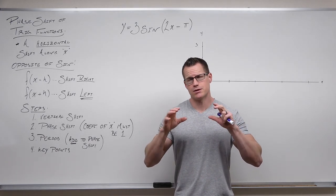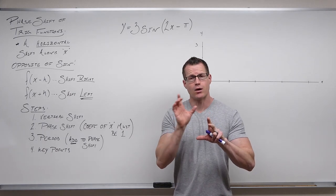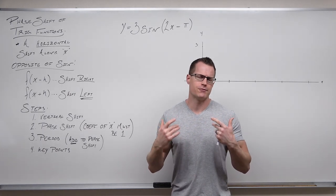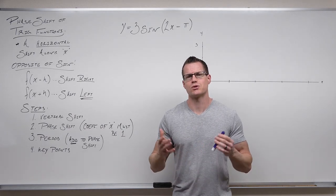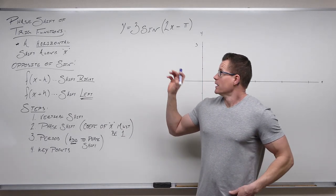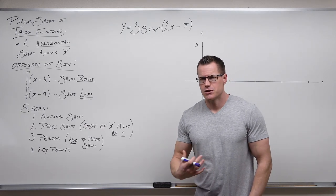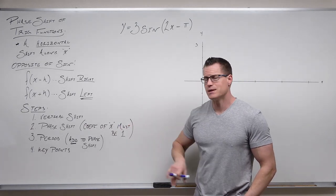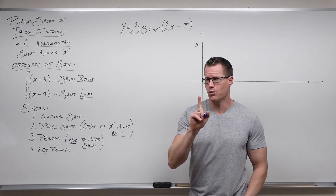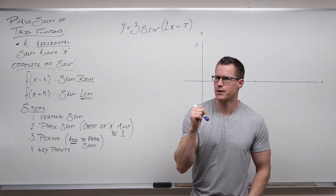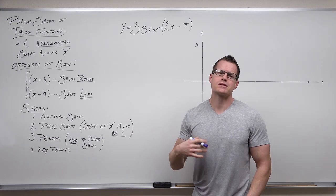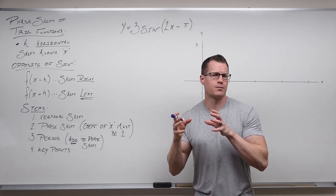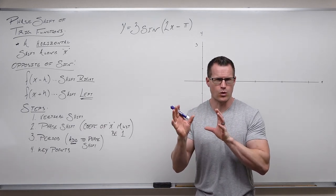The only new thing here is the horizontal shift — plus means left, minus means right — called a phase shift for trig functions. For our first example: 3 sine of (2x minus π). We need the coefficient of x to be 1 to identify both the period and the phase shift, so we put it in proper form.